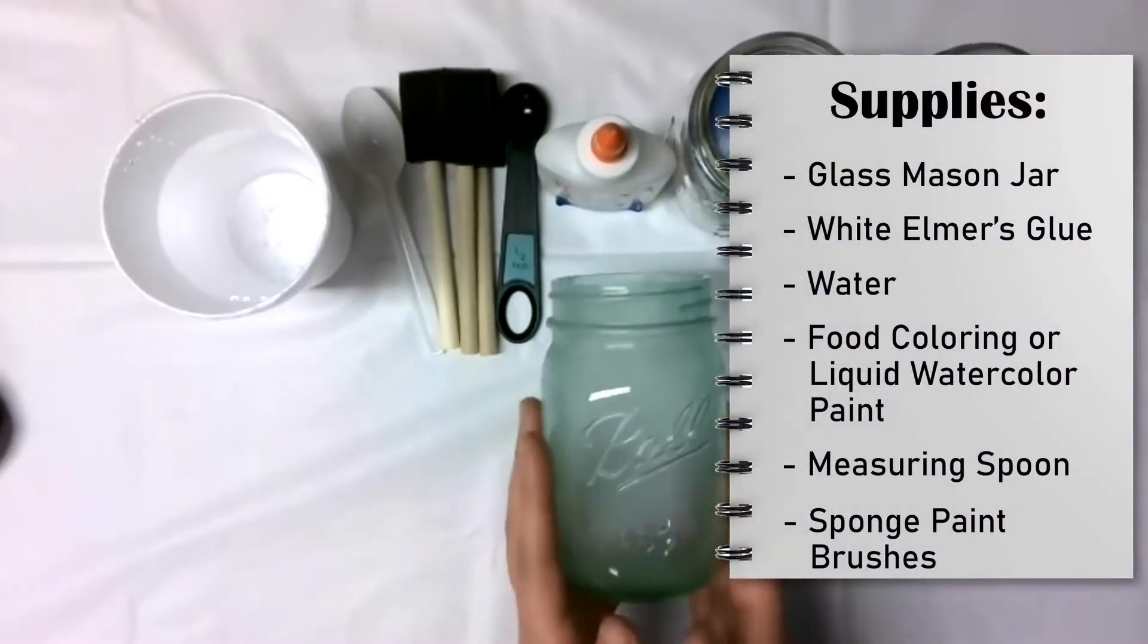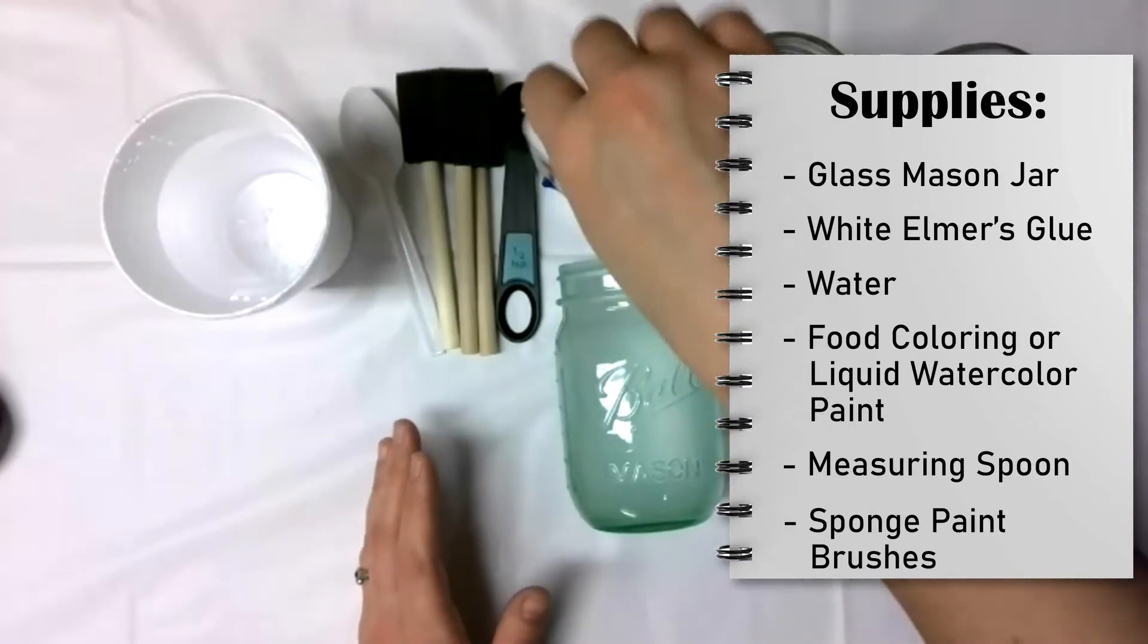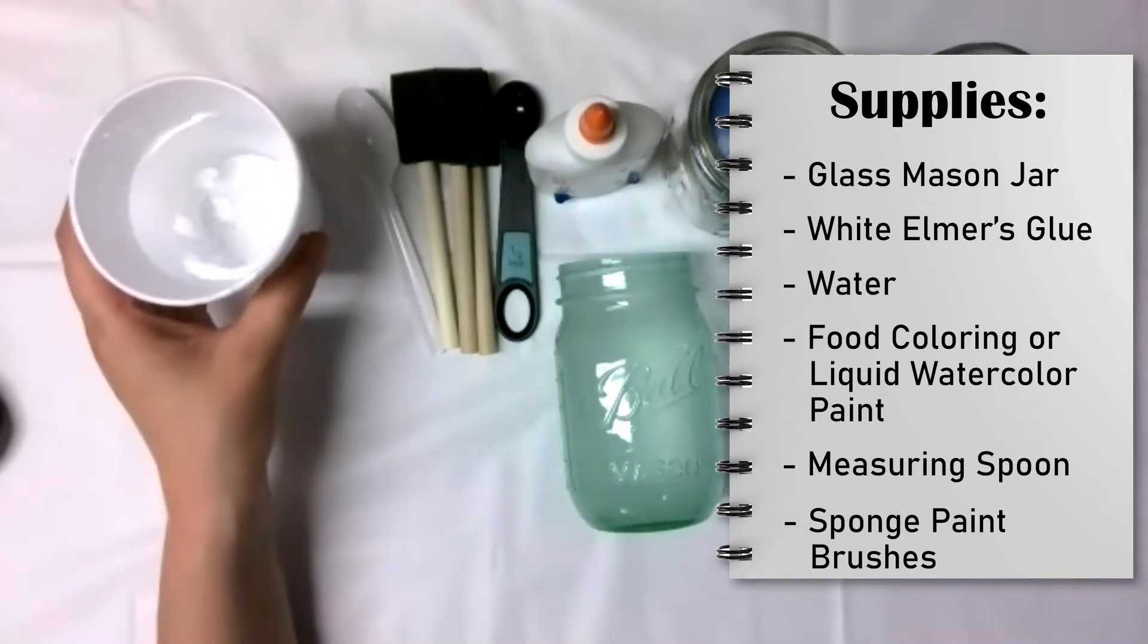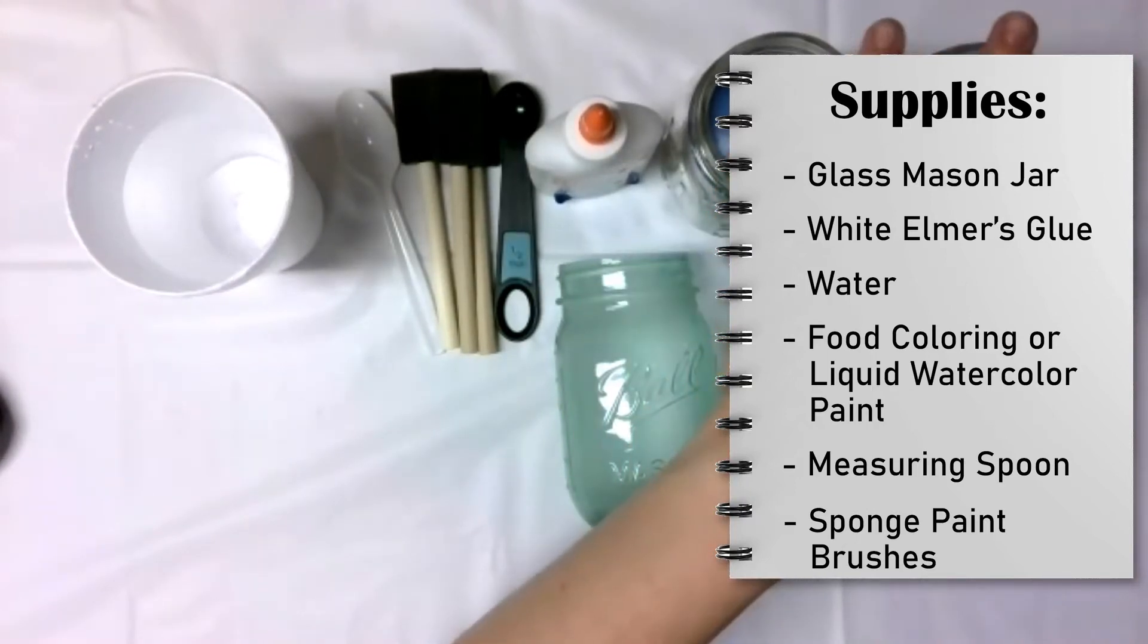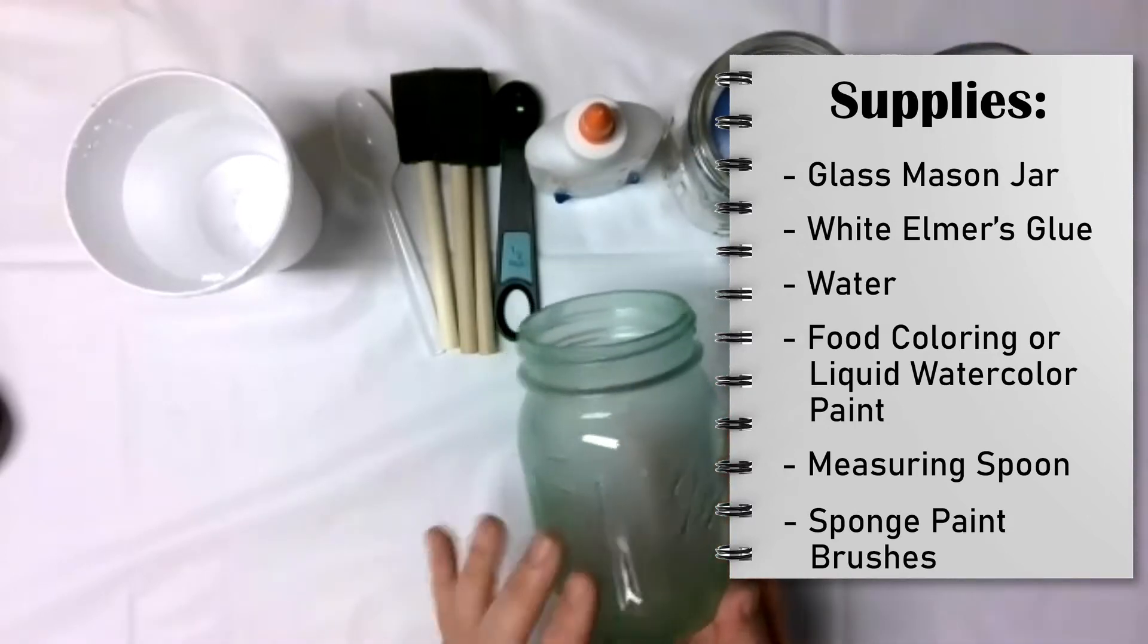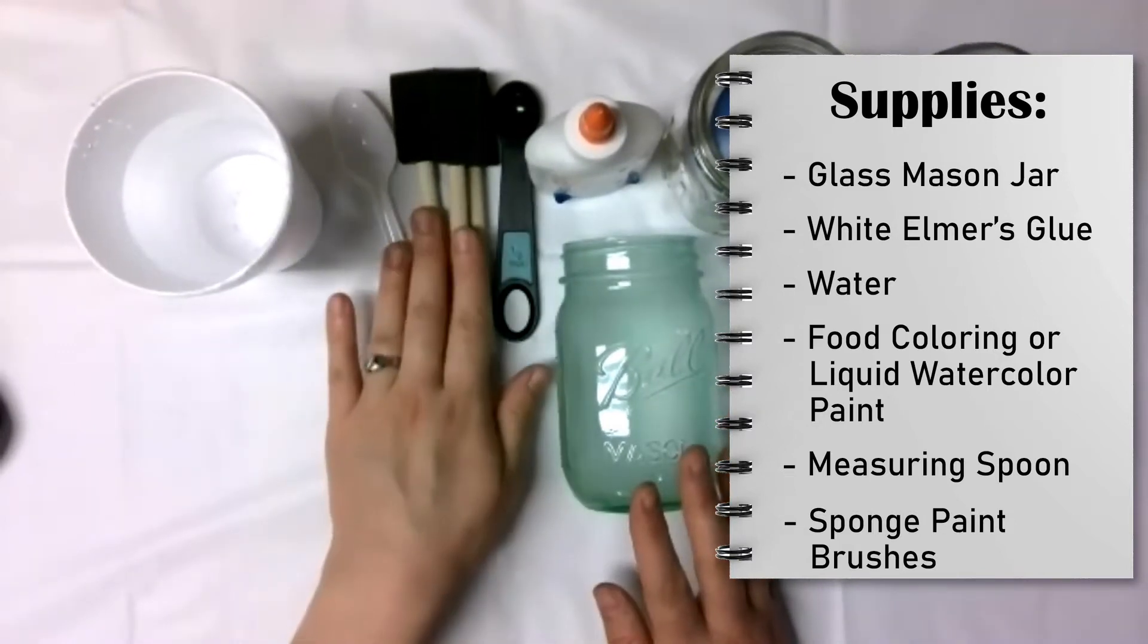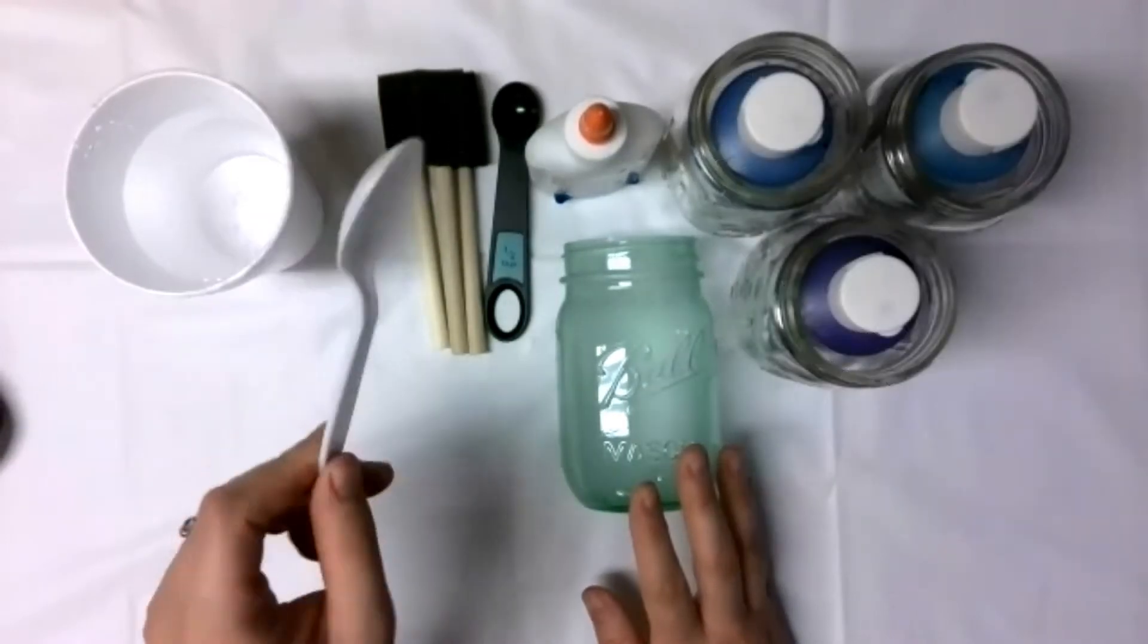For this what you are going to need is of course glass mason jars so I have three here. You are also going to need white Elmer's glue, water, and liquid food coloring or liquid watercolor paints. I'm using liquid watercolor paints here. I have violet, blue, and turquoise. The original sample that I made I used green. You will also need some sponge paint brushes, a measuring spoon, and I have a plastic spoon here.